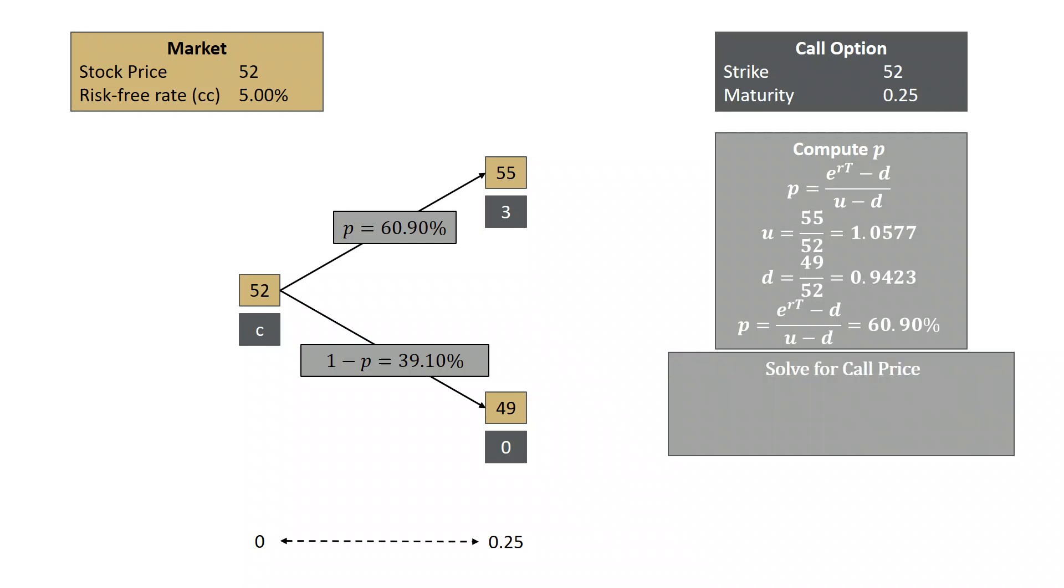To value our call option, we use the following formula. C equals P times DU, where DU is the value of the derivative if the stock goes up, plus 1 minus P times DD, where DD is the value of the derivative if the stock goes down, times E to the minus RT. Both DU and DD happen in three months, so we have to discount those values back to today.